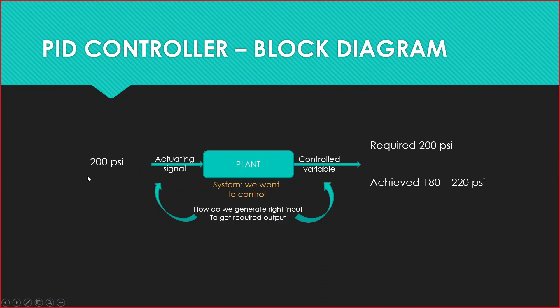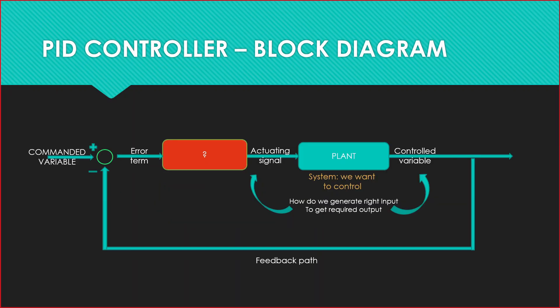You have given the set point or the actuating signal 200 PSI. But when that signal goes to the plant, it can be lost or gained. This is the output which we have required 200 PSI. It was not 180 or 220. Consider that it was 180. If it was 180, then the error generated was 20.